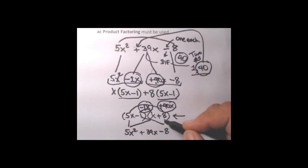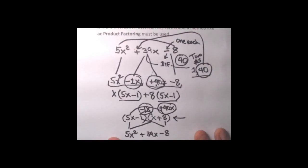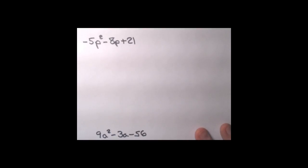As usual, what we're doing to factor these quadratics is un-multiplying them — which is what factoring officially means — getting back to the original binomials. Why are we doing all of this? So we'll be able to solve quadratic equations, which are the second most common after linear equations in everyday problems. Those will be coming up, but now let's get more practice with the AC product method.